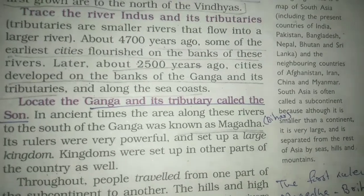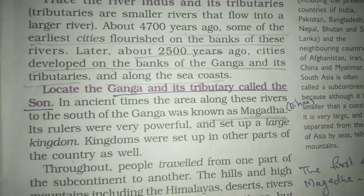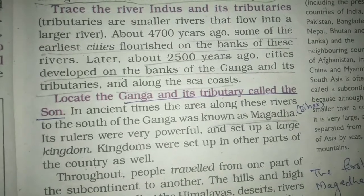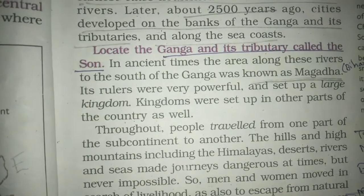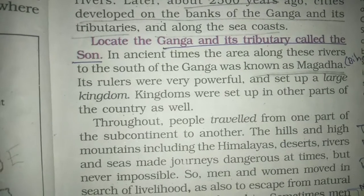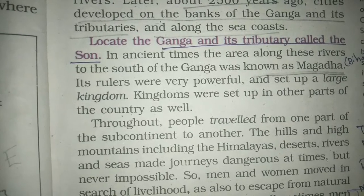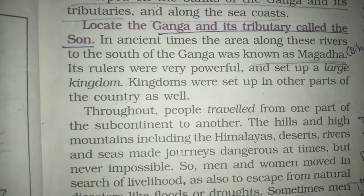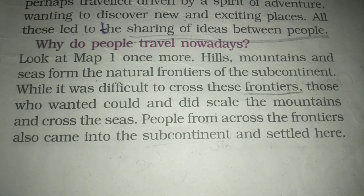This led to the rise of the Magadha kingdom in the southern area of the Ganga river. The first ruler of Magadha was Brihadrada, a very powerful king who set up a large kingdom. His son was Bimbisara and the grandson was Ajatashatru. The capital of Magadha was Pataliputra, which is present-day Patna in Bihar.